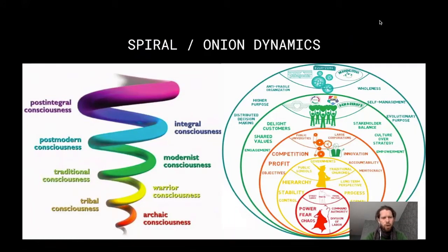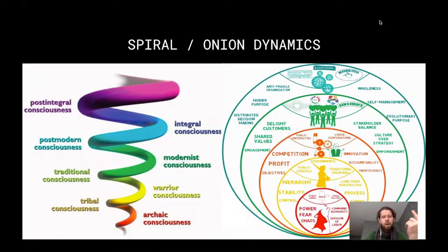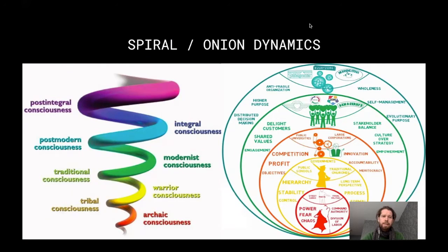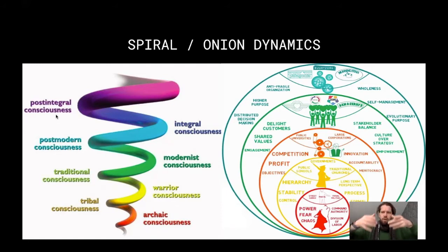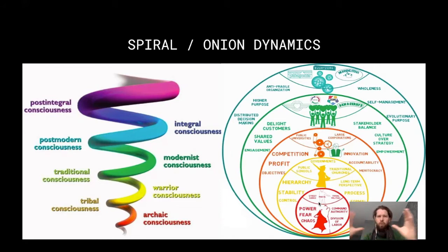Now I'll look at spiral dynamics — how an organization and the mindsets of people actually grow. If you look at spiral dynamics, you see how you go from a basic archaic consciousness to more advanced consciousness. The spiral dynamics is like the front view, and it's easier to understand if you take a top view, a horizontal view, which you can see in the onion layer structure of organizations. It shows the evolution of our organizations.